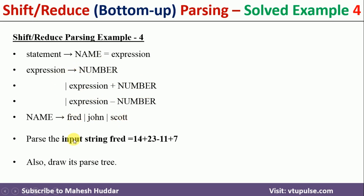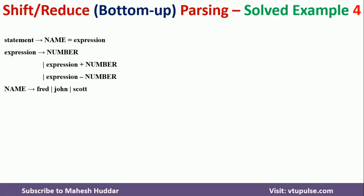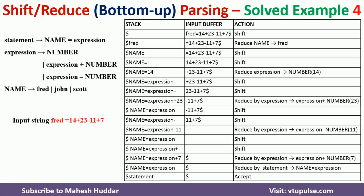Given this grammar, we want to validate the input: fred equals 14 plus 23 minus 11 plus 7. If it is valid, we have to draw the parse tree.